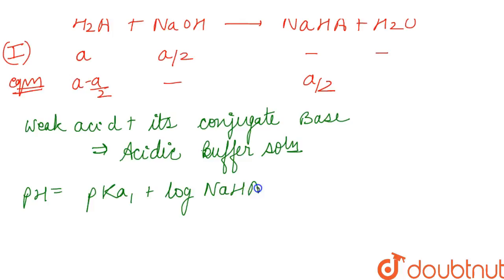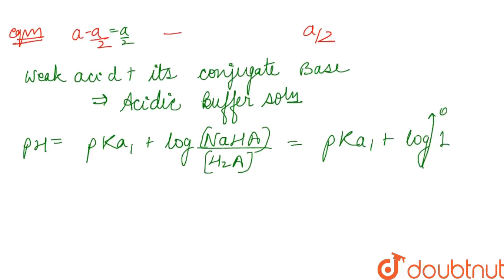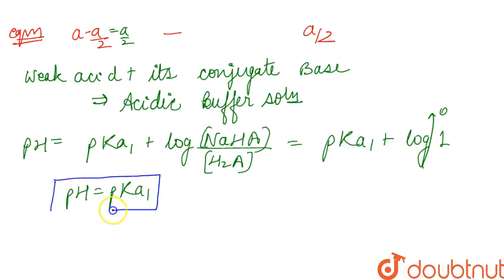We can see that both the salt and acid amounts are A/2, so log of (A/2) upon (A/2) equals log of 1, which equals 0. Therefore, pH equals pK₁ plus log of 1, which gives pH equals pK₁. At halfway to the first equivalent point, pH is equal to pK₁.